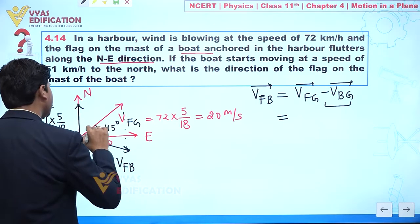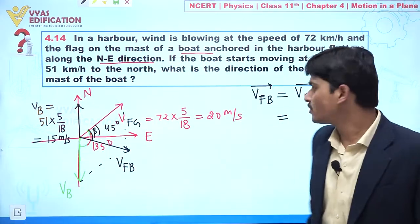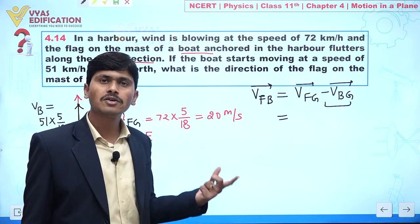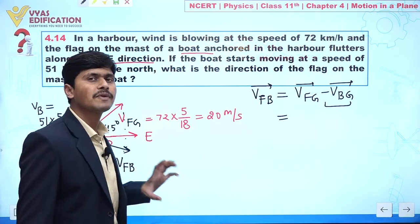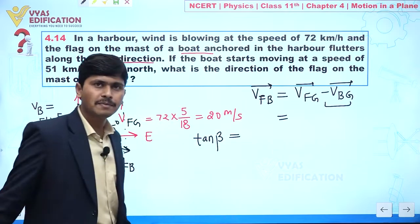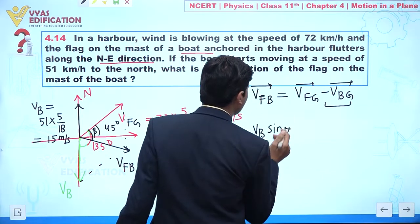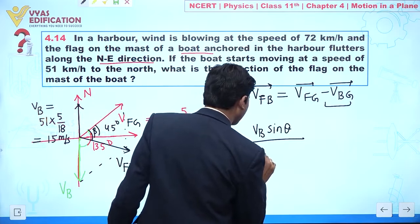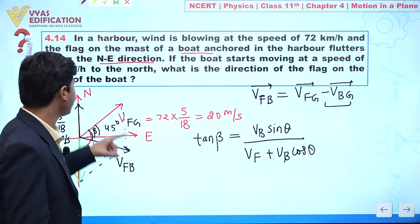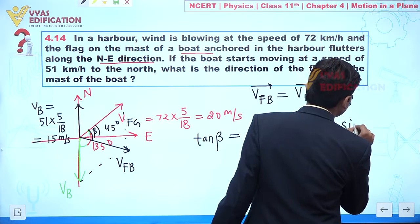We can calculate angle beta by applying the law of parallelogram addition or the concept of vector addition. The direction is given by tan β = V_b sin θ divided by (V_f + V_b cos θ), where θ is the angle between V_fg and V_b. Since this angle is 135 degrees, we can substitute accordingly.